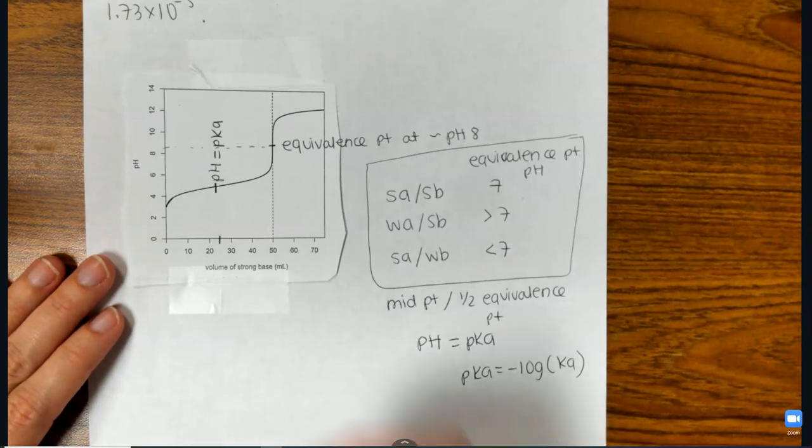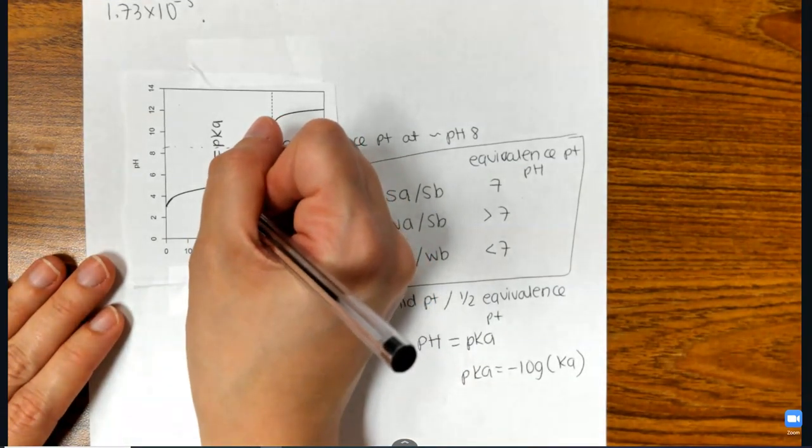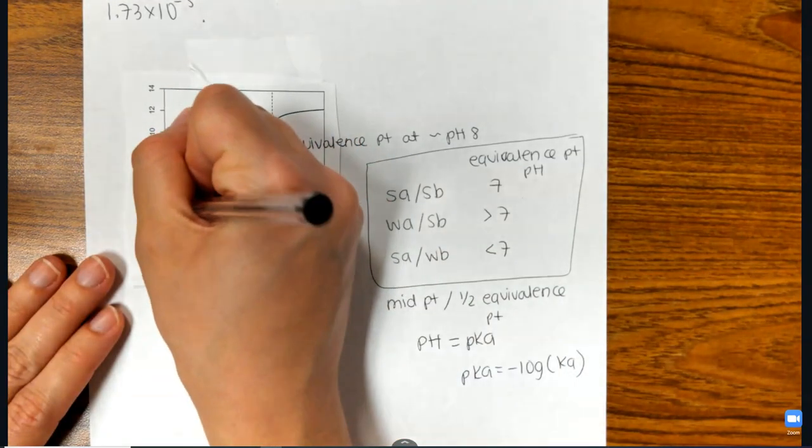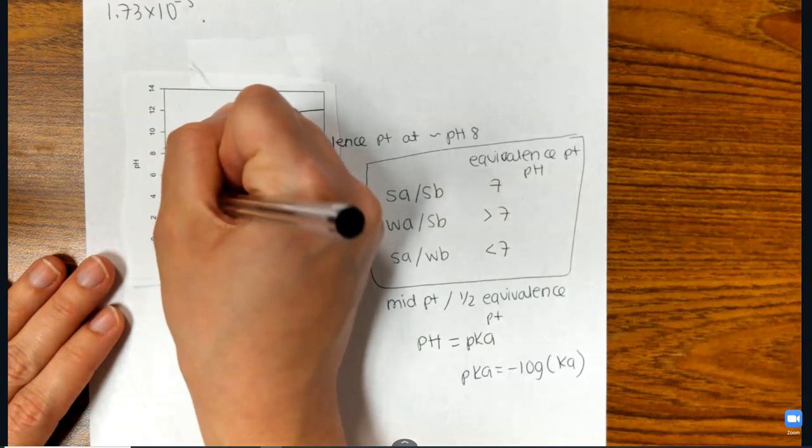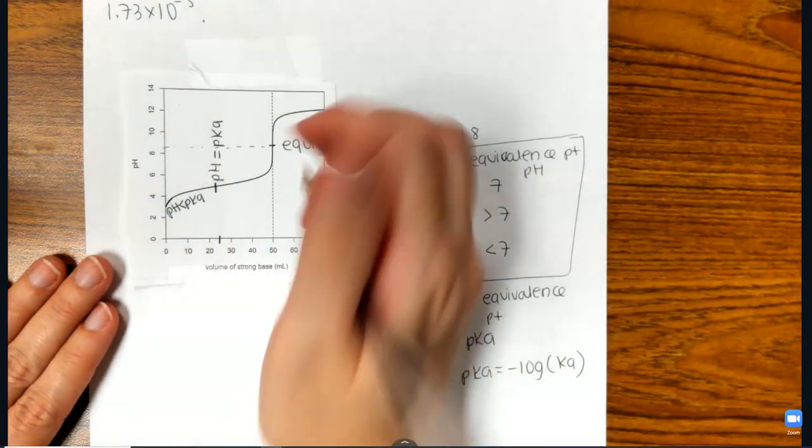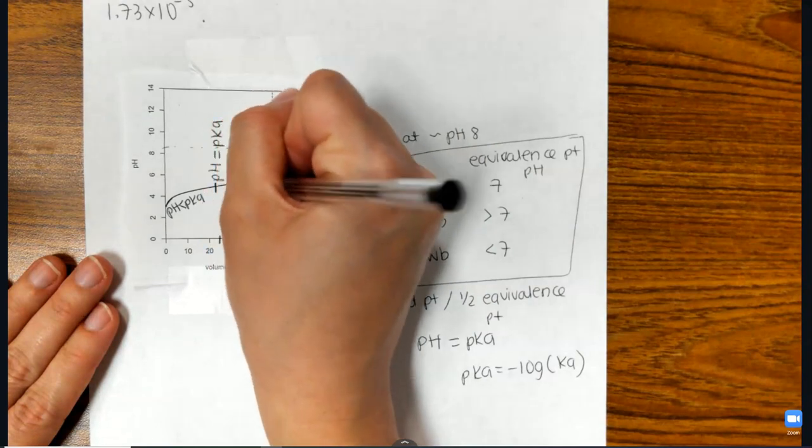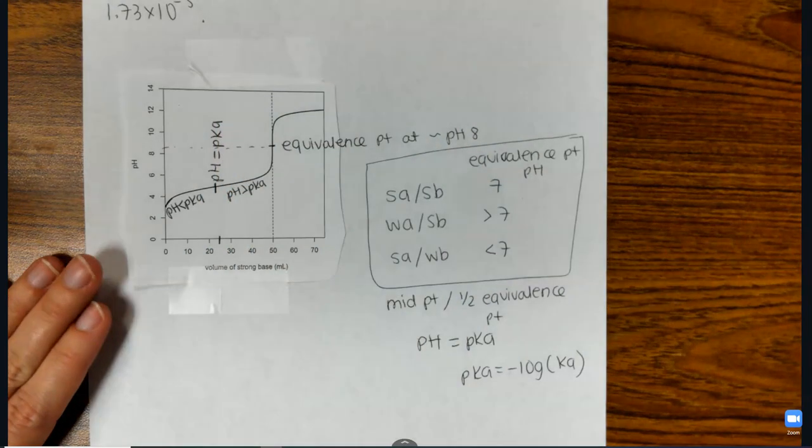So right here, pH is pKa. Before the midpoint, so from 24 milliliters and lower, pH is less than pKa. After the midpoint, the pH is greater than the pKa of the acid.